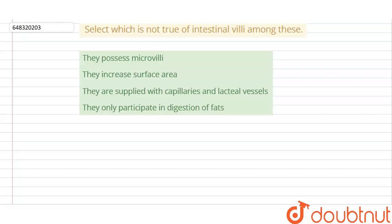Hello everyone. In this video we have a question: select which is not true of intestinal villi. We have to identify which one is not true — that means out of the four options, three will be correct statements about intestinal villi, but one will be wrong.